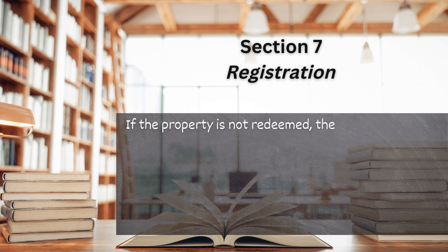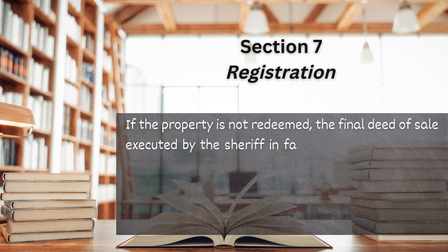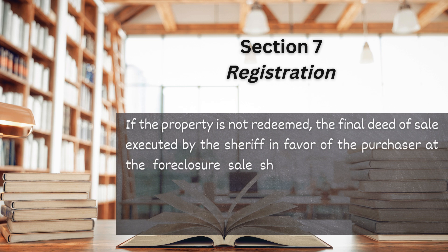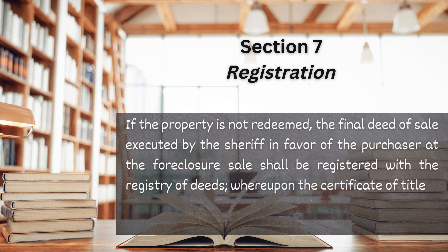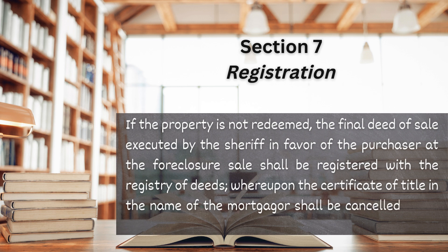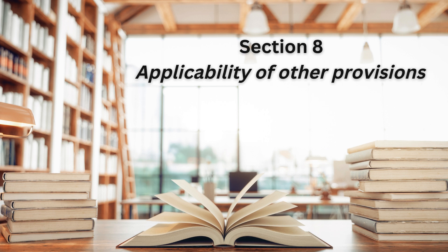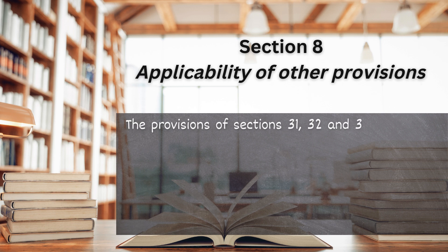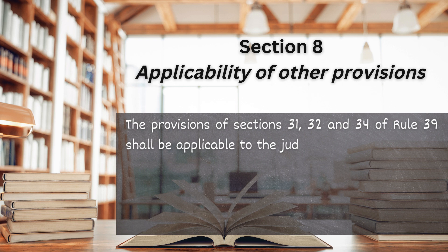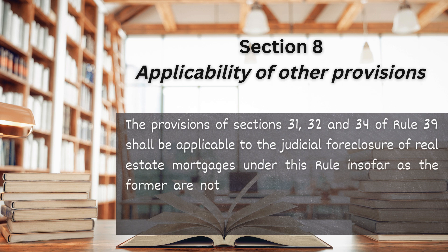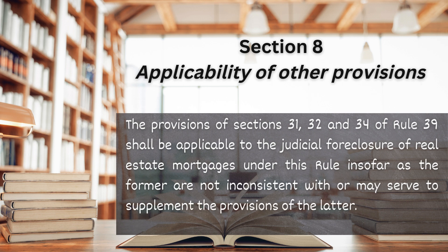If the property is not redeemed, the final deed of sale executed by the sheriff in favor of the purchaser at the foreclosure sale shall be registered with the registry of deeds, whereupon the certificate of title in the name of the mortgagor shall be cancelled, and a new one issued in the name of the purchaser. Section 8. Applicability of Other Provisions. The provisions of Sections 31, 32, and 34 of Rule 39 shall be applicable to the judicial foreclosure of real estate mortgages under this rule insofar as the former are not inconsistent with or may serve to supplement the provisions of the latter.